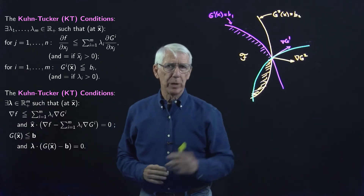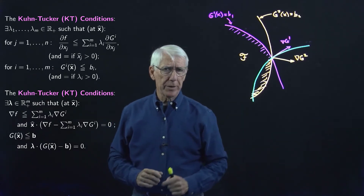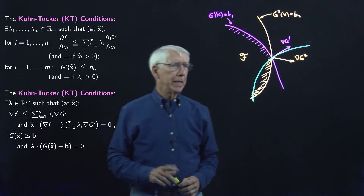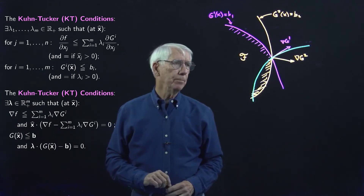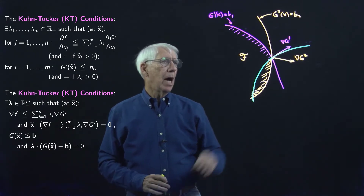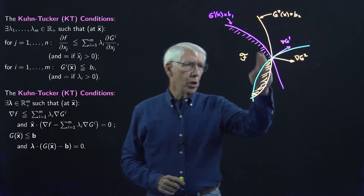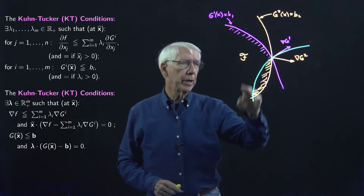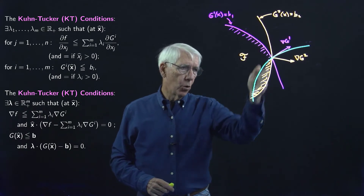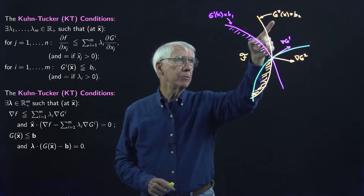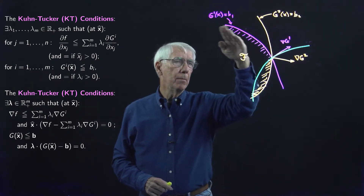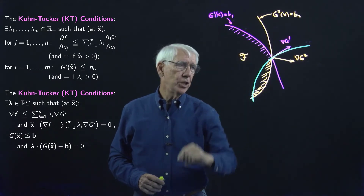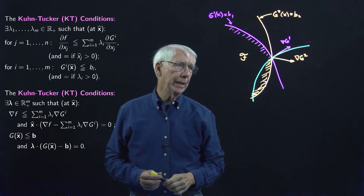We're back with another example. In this example, I've already drawn in two constraints: an orange constraint, G2, and a pink constraint, G1.